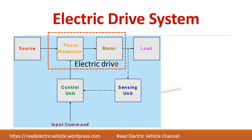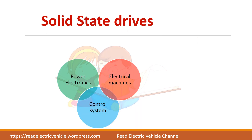The power modulator is called the electrical drive, and the whole thing is called the drive system. This modulator receives commands from the control unit, which receives input from the sensing unit. We sense parameters such as voltage, current, speed, and position, which are given to the control unit. The control unit generates gate pulses for the power converter, which drives the motor.